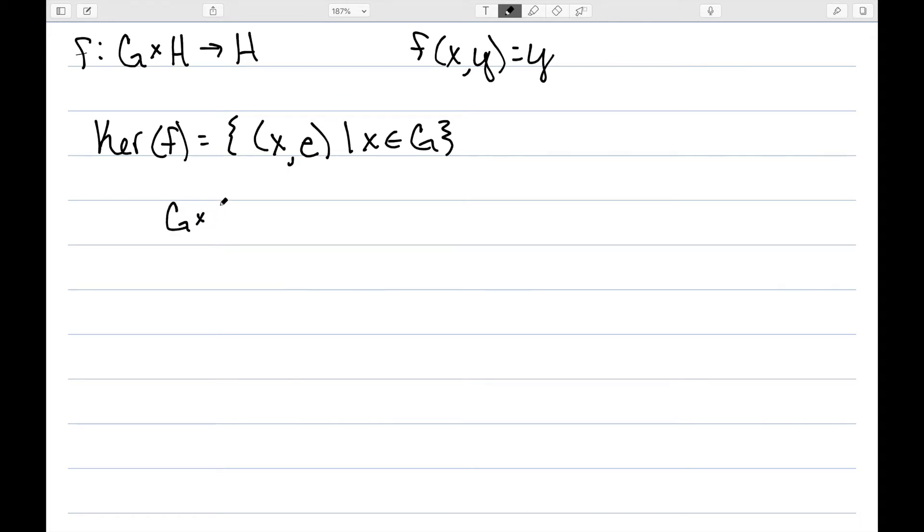Then we have G cross H over, I'm going to abbreviate this as (G, E), will be isomorphic to H. So I've essentially kind of factored out that first coordinate, that first group G.